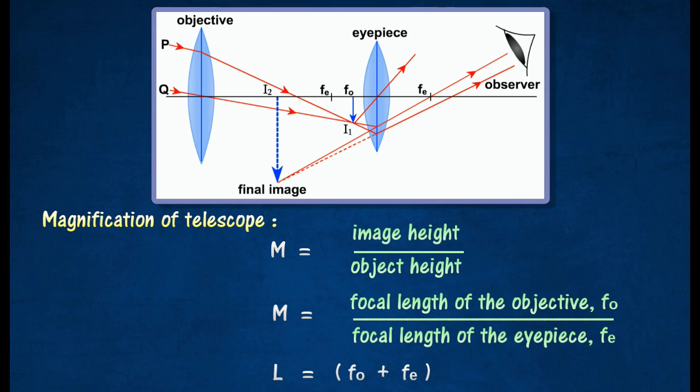The principal focus of the objective lens is coincident with the principal focus of the eyepiece. Both lenses have the same focal plane.